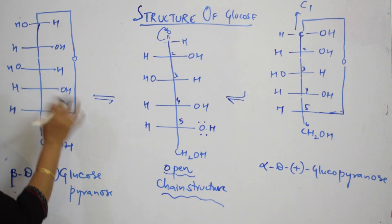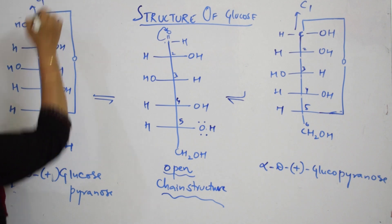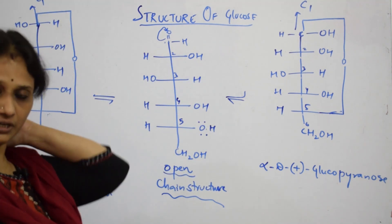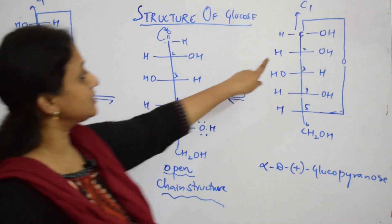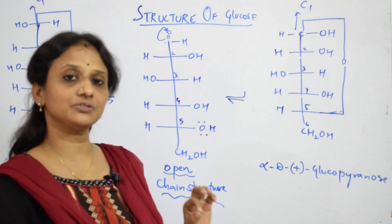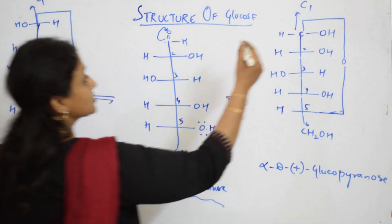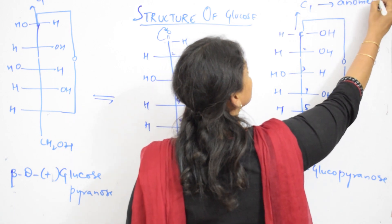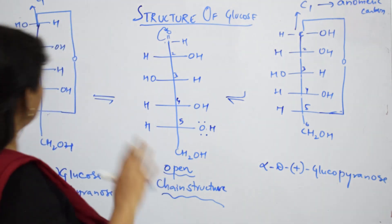Now observe carefully: the whole glucose molecule differs only at one position, that is the C1 carbon. At this C1 carbon there is a variation in configuration between alpha and beta. That C1 carbon is called the anomeric carbon. So C1 is called the anomeric carbon — the carbon where there is a variation in configuration.